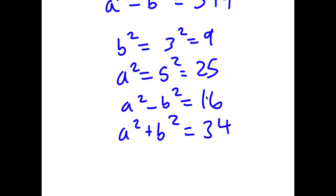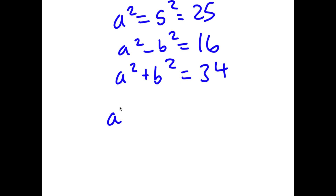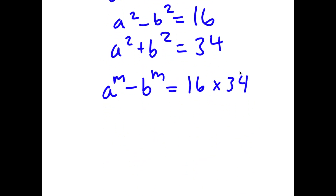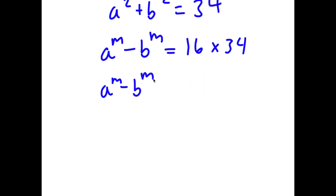By knowing this, we can say that a to the power of m minus b to the power of m equals 16 times 34, because 544 equals 16 times 34. And a squared minus b squared is 16, and a squared plus b squared is 34. So I'm going to rewrite this as a to the power of m minus b to the power of m is equal to a squared minus b squared, times a squared plus b squared.